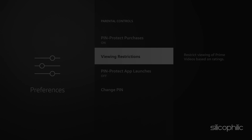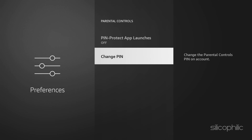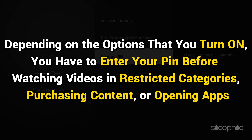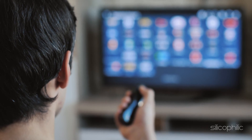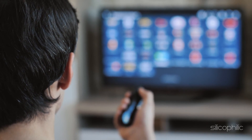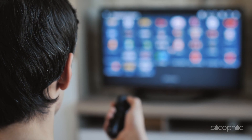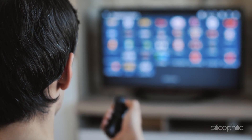The last option is Change Your PIN. You can select to change your Prime Video PIN. Depending on the options that you turn on, you have to enter your PIN before watching videos in restricted categories, purchasing content, or opening apps. And there you have it — the method to put a password or PIN on purchases for Amazon FireStick.